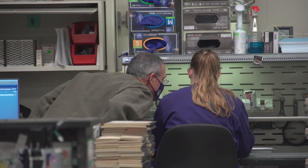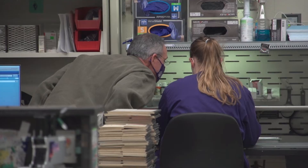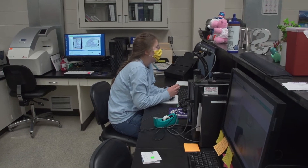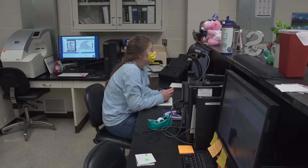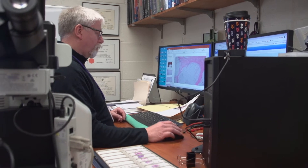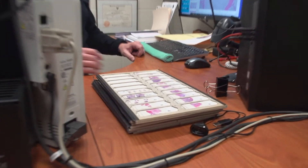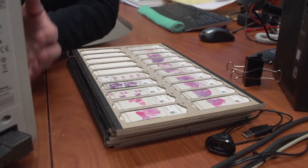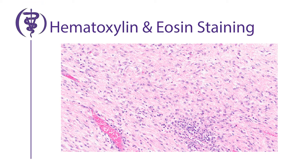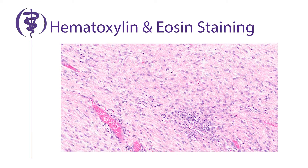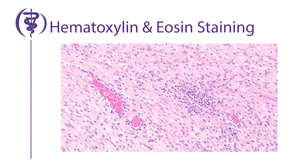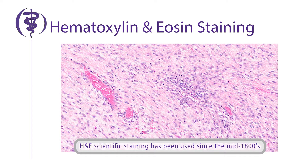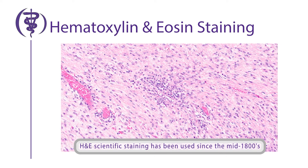We work closely with the board-certified clinical and anatomic pathologists as well as numerous pathology residents in training. Our routine and most commonly used stain is the hematoxylin and eosin, or H&E. The H&E stain demonstrates tissue structure and cell distribution and is used to evaluate lesions in a wide variety of tissues of any species.